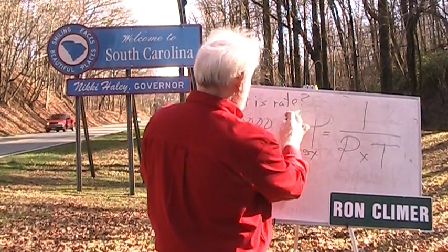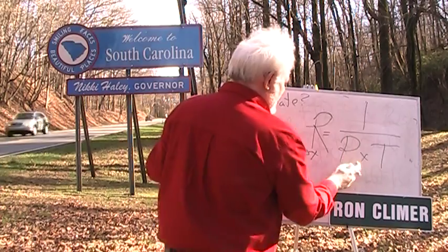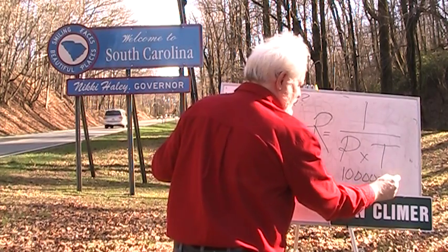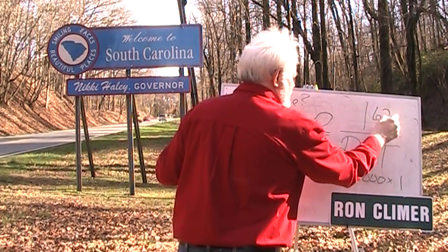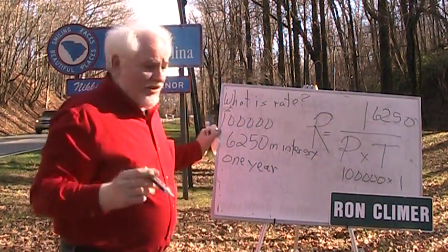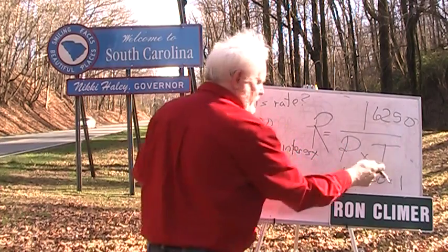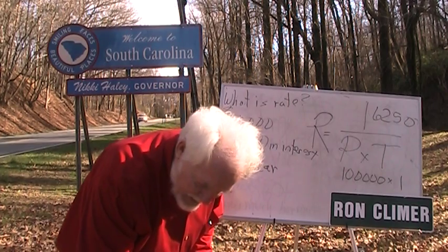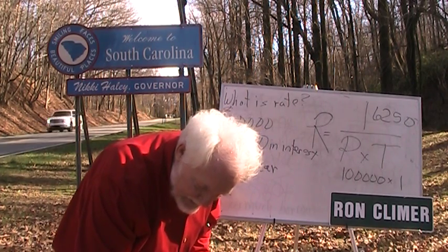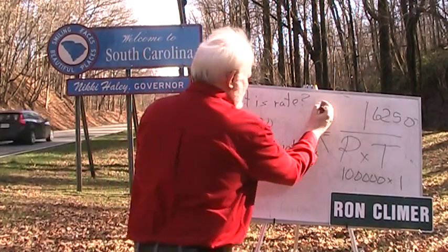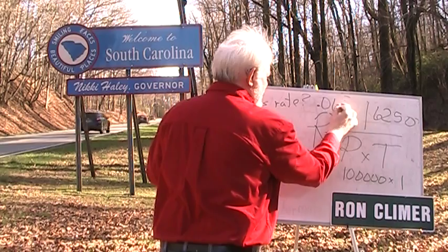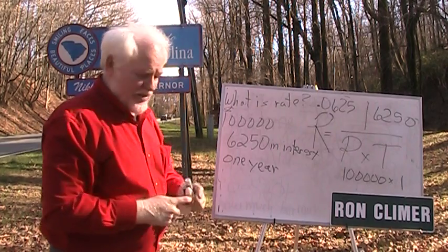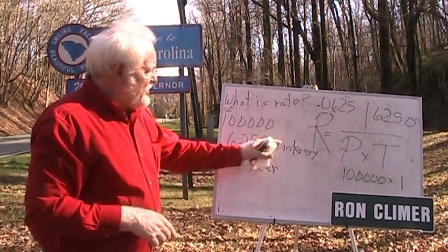Rate equals I over P times T. We paid $6,250 in interest on $100,000 for one year. So 6,250 divided by 100,000 — my calculator says .0625. And that's how you compute interest and use this formula.